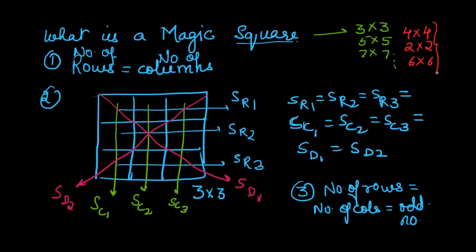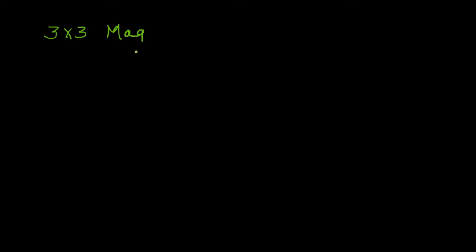Now there are certain rules to form a magic square. They are very simple rules — you can learn those rules and impress your friends by forming the magic square in just a couple of seconds. We will be learning the rules as and when we form a magic square. Let us try forming the smallest magic square — a 3 by 3 magic square, so three rows and three columns.